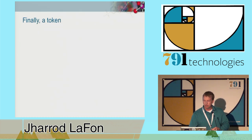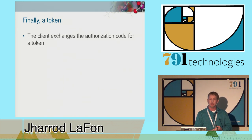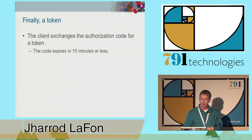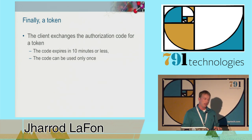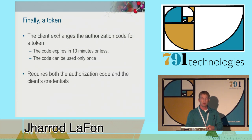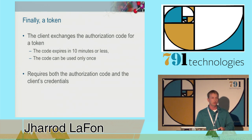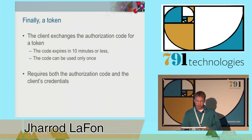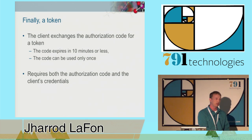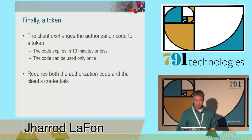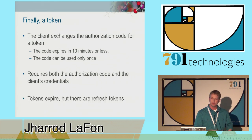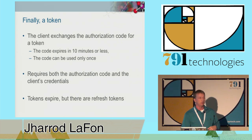Now the user has been redirected back to the client. The client is going to exchange the authorization code for a token. The authorization code expires in 10 minutes or less according to the spec, and it can only be used once. Here's how we get a token to the client without the user having access to it: the user has access to the authorization code—it's in the redirect—but the client has to have both the authorization code and the credentials that belong to the client to actually get an access token. So even if you leak the authorization code, if you use the authorization code flow with a confidential client, you still don't leak an access token unless the attacker also has your client credentials. Tokens expire, but there are things called refresh tokens in the spec that allow you to get new tokens using existing ones.